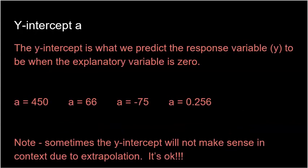What about the y-intercept? The y-intercept is what we predict the response variable to be when the explanatory variable is 0. The a value — the y-intercept — is always what we expect the prediction to be for y when x is 0. For example, if your y-intercept is 450, we say: if my explanatory variable is 0, I would predict a y-value of 450 units. It can even be negative — if x is 0, I would predict the response variable to be negative 75 units.